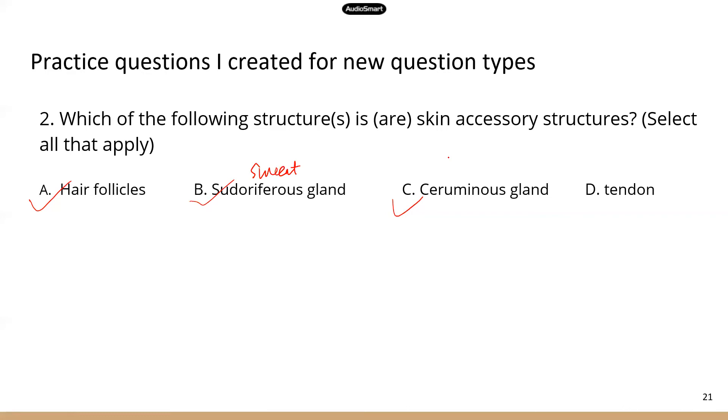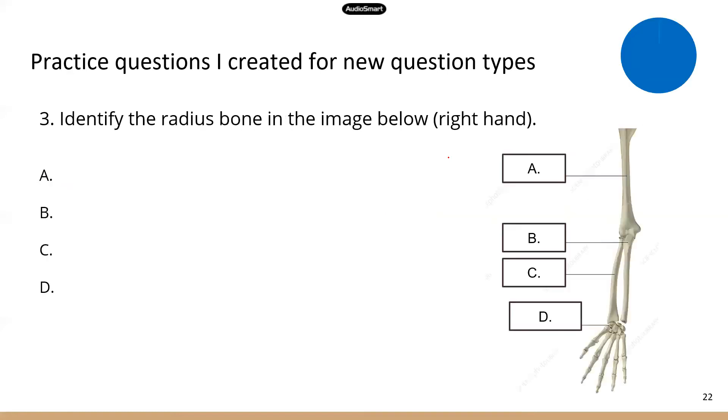Okay. The next question is going to be an image question. So you will have four different spots on the image, and then you're going to select the correct spot. Now keep in mind that I don't have that fancy tool for you to just click on a spot in the image. So I make it like A, B, C, D, so you will choose which one is the correct answer. Okay, let's get started.